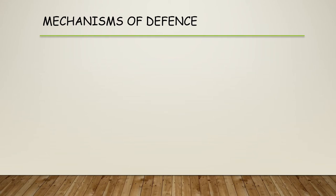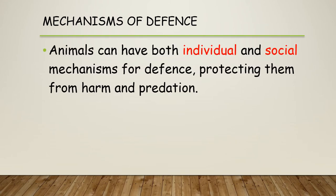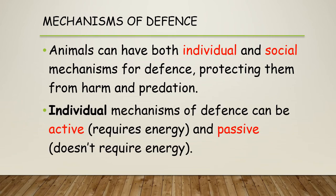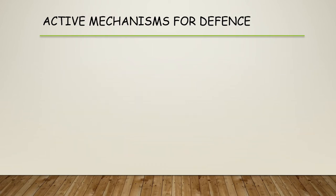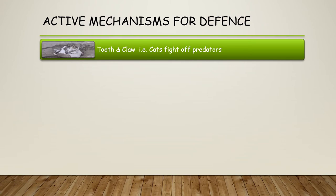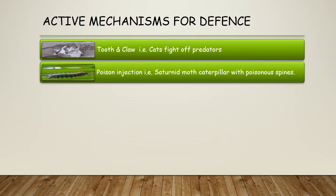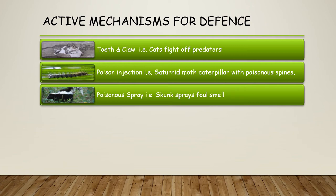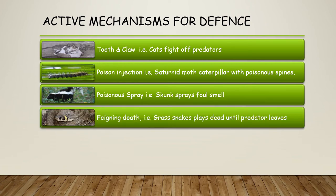Another good use of social interactions is for defence. Animals can have both individual and social mechanisms for defence, protecting them from harm and predation. Individual mechanisms can be active — requiring energy — or passive, not requiring energy. Active mechanisms include tooth and claw fighting, poisonous injections such as the saturn moth caterpillar's poisonous spines, spraying a foul smell like the skunk, and feigning death — grass snakes play dead until the predator loses interest.